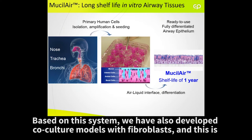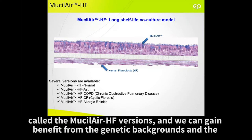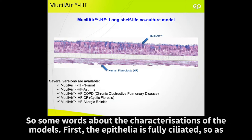Based on this system, we have also developed co-culture models with fibroblasts, called MucilAir-HF versions. And we can gain benefit from the genetic backgrounds and pathology of the patients to produce normal versions, but also asthmatic versions, COPD versions, cystic fibrosis versions, and allergic rhinitis versions.